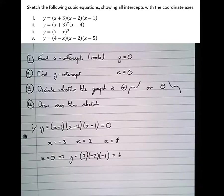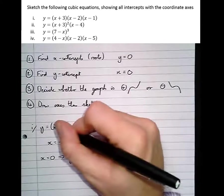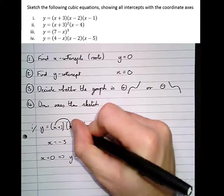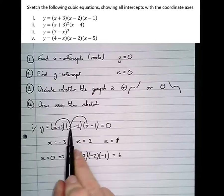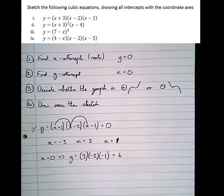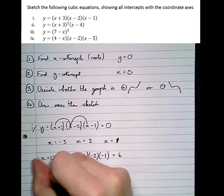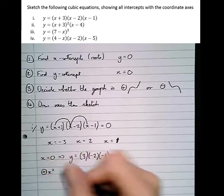So now decide whether it's a positive or a negative cubic. Well, the way to do that, let's multiply out just the x terms and see when with a positive x or negative x. So x times x times x, all three of them positive, make a positive x-cubed graph. So that's what we're going to draw.